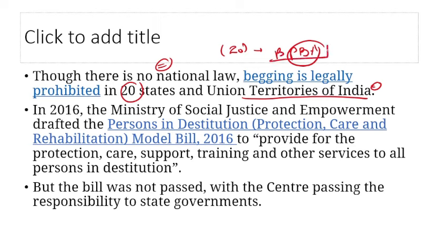In 2016, the Ministry of Social Justice and Empowerment introduced the Persons in Destitution (Protection, Care and Rehabilitation) Model Bill 2016, aimed at protecting, caring for, supporting and training destitute, poor, and orphaned persons so they do not end up begging. However, this bill was never passed.